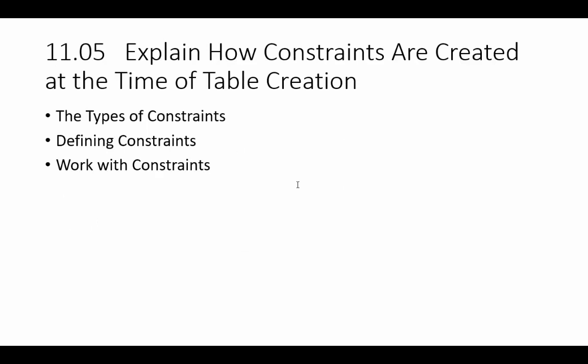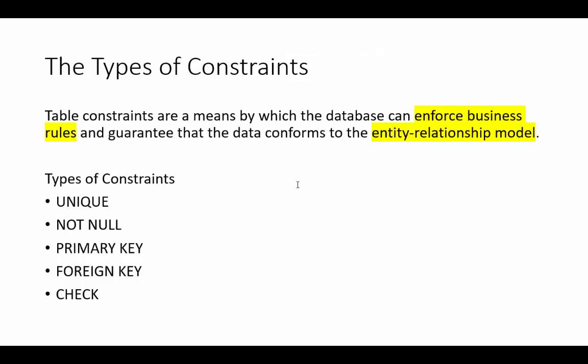Now we go to section five. This section covers the types of constraints, defining constraints, and working with constraints. Constraints are rules — they enforce business rules and guarantee that the data conforms to the entity relationship model. The types of constraints are: unique, not null, primary key, foreign key, and check.